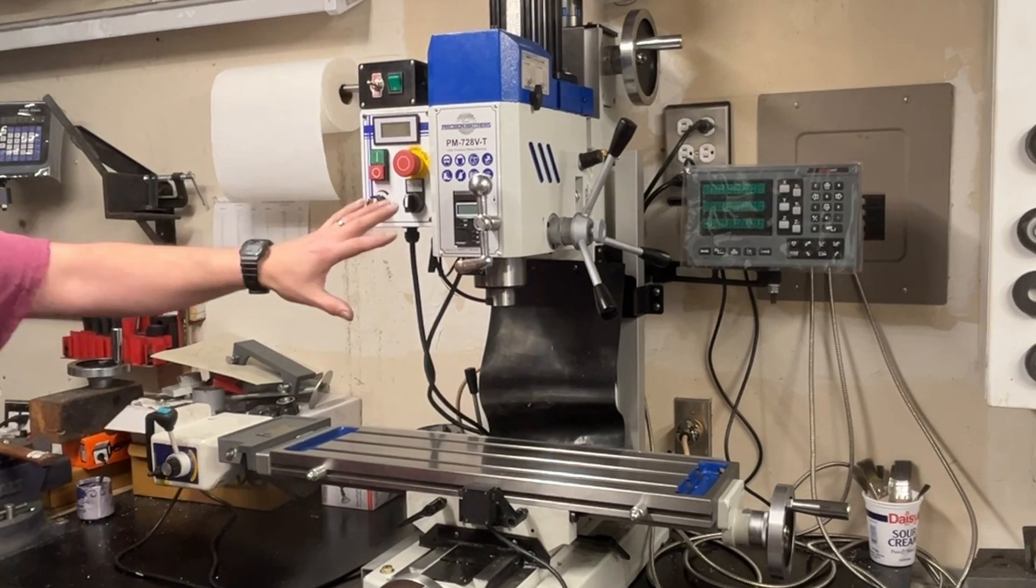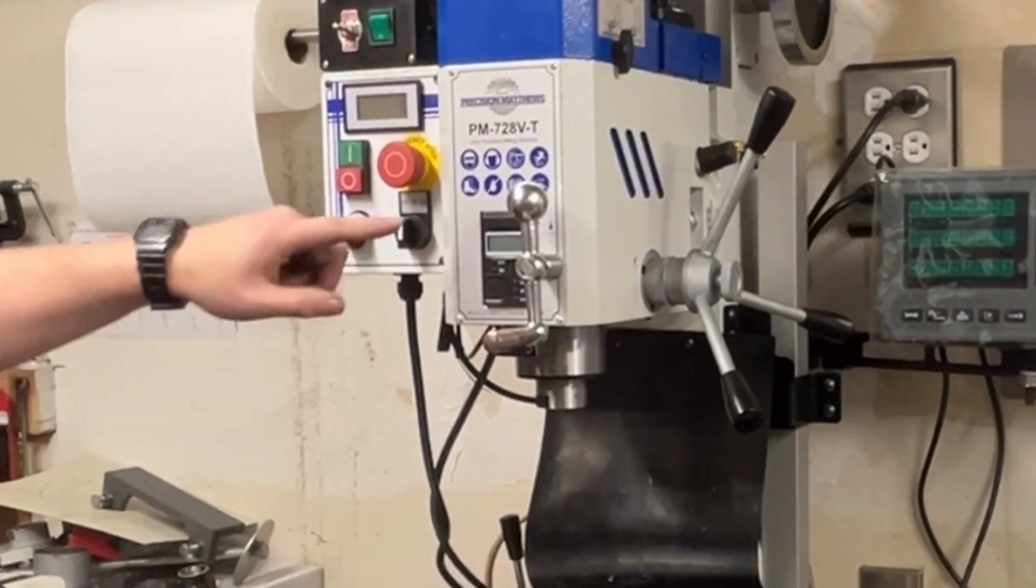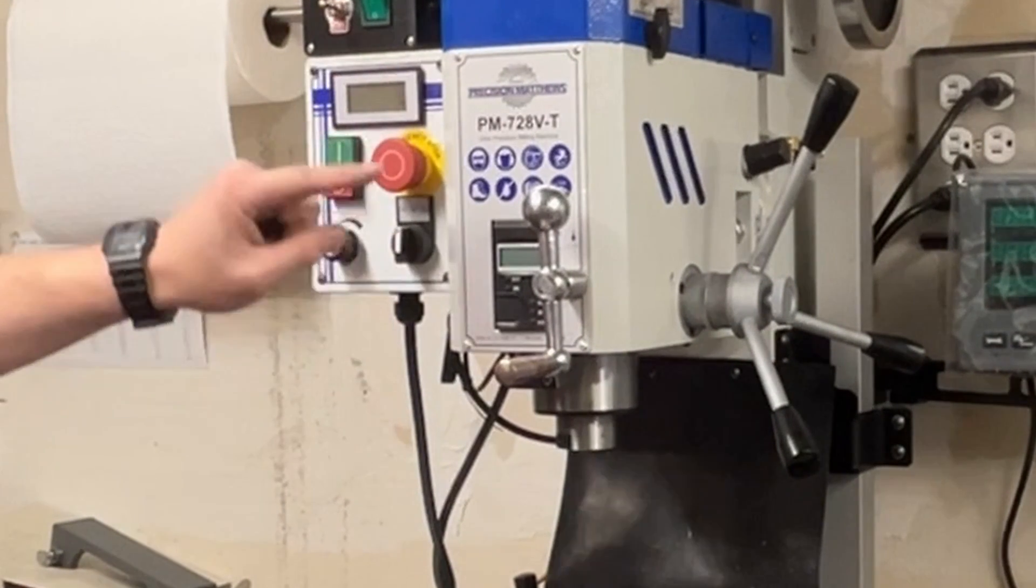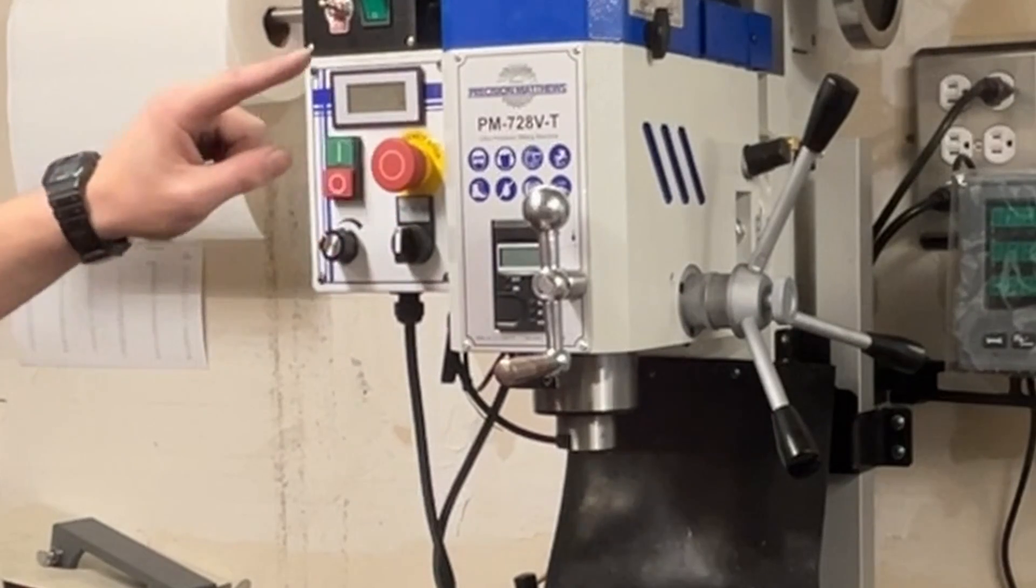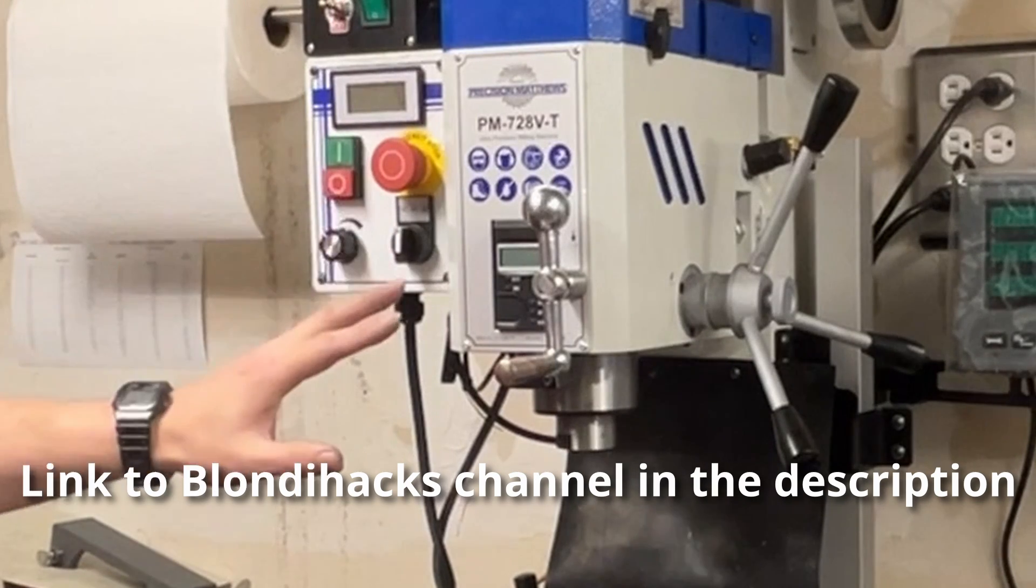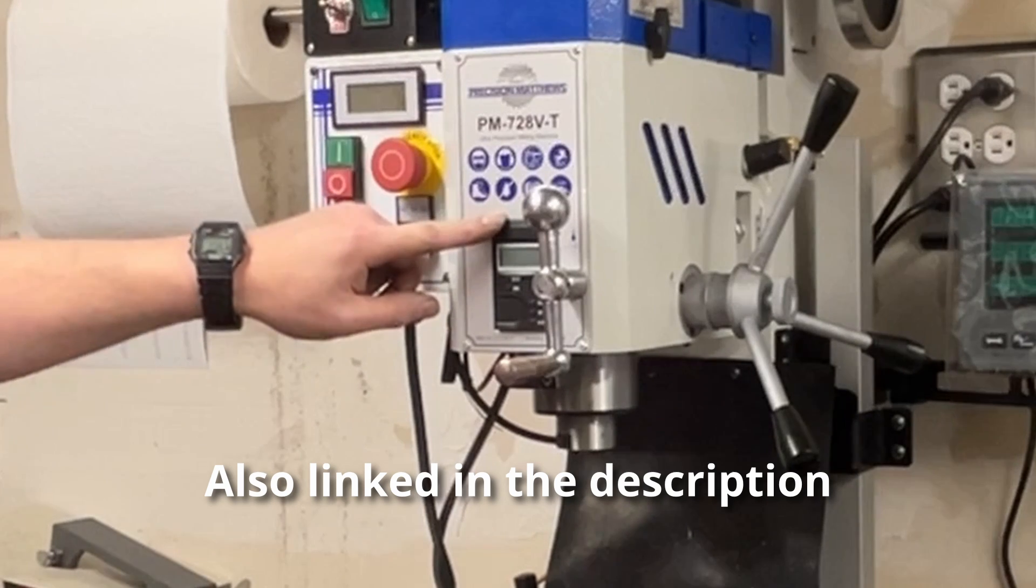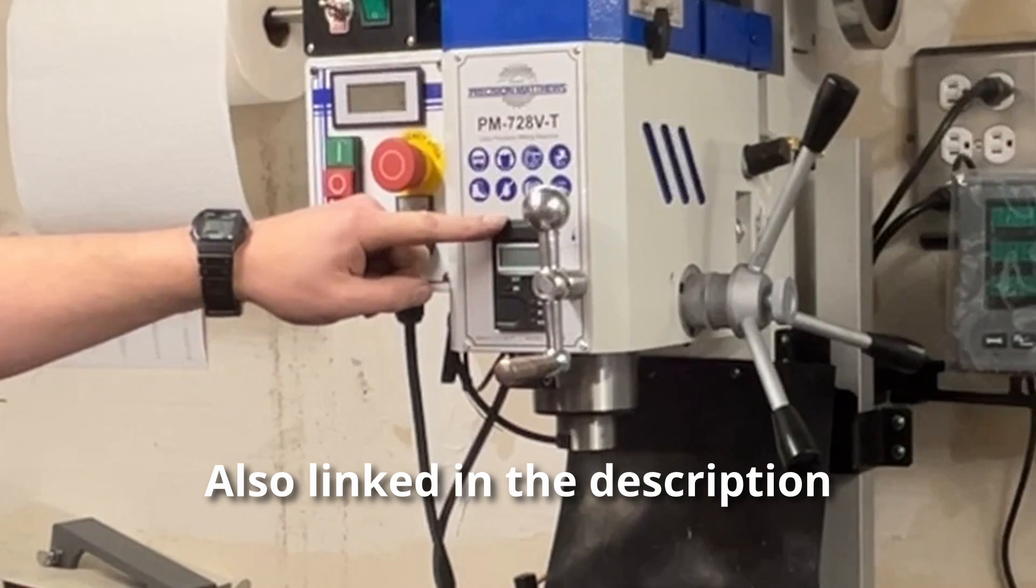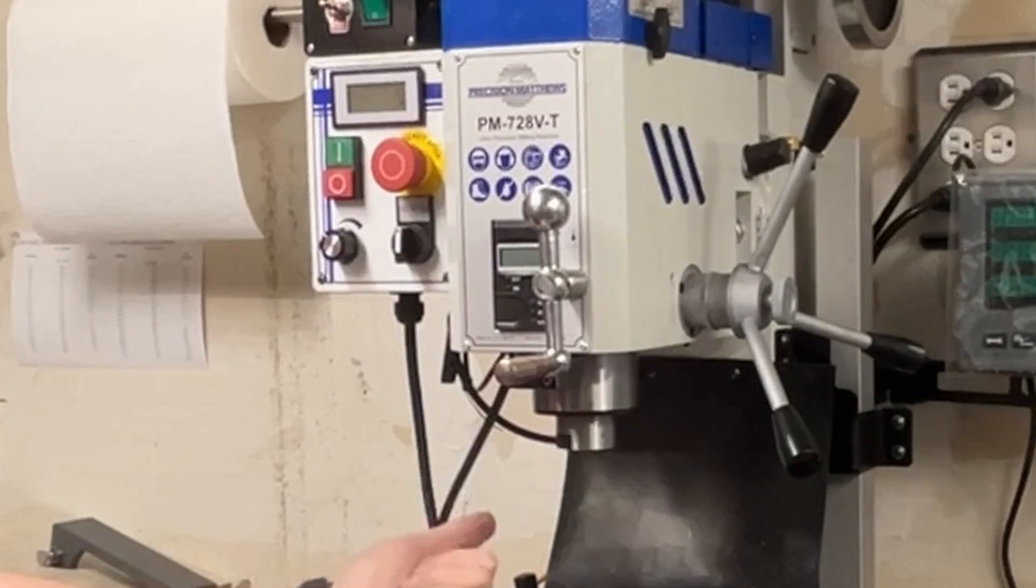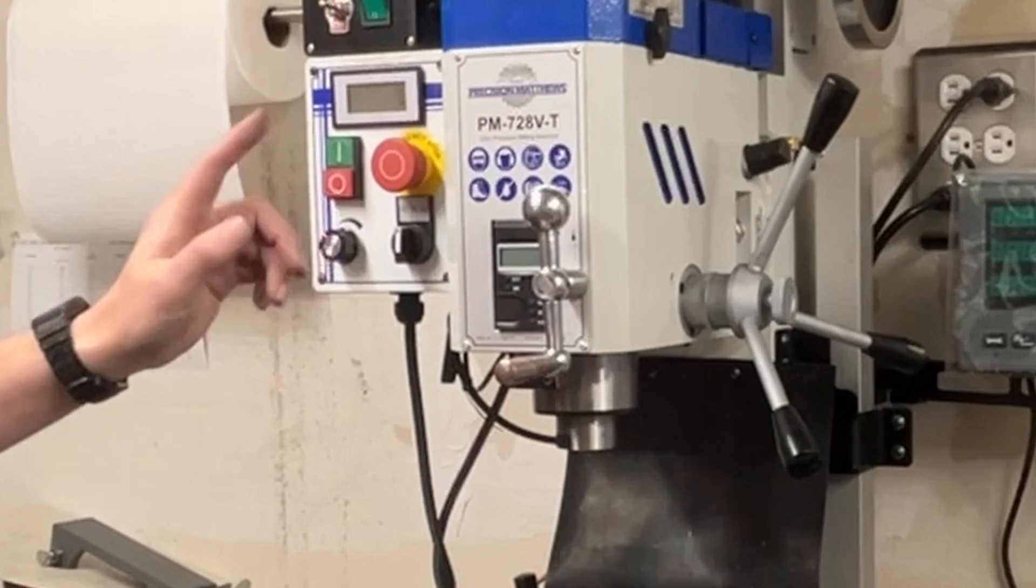The very first improvement I made—I actually ordered the parts before the mill ever came—was to replace the Quill DRO. Now I don't get any credit for this. The reason I knew what parts to order is because Blondie Hacks, who has the same mill, did all the work. She's got a fantastic video on replacing this DRO. It covers the reasons why it's a good idea to replace the DRO and provides a part number. I'm not going to tell you anything about it because really you should go watch her video. It's an outstanding video. I would not have been able to replace this without it, so go check that out.